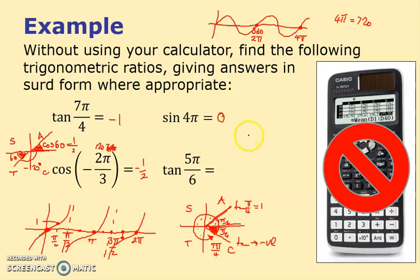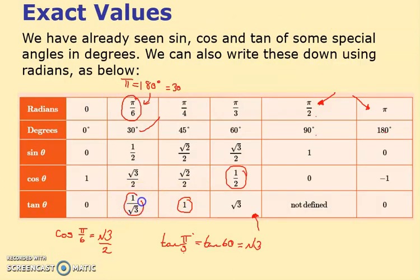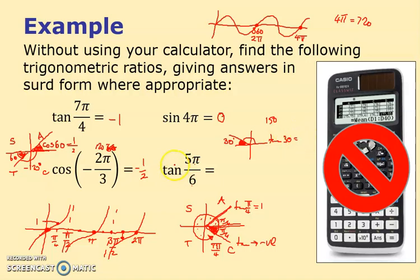For tan(5π/6): π/6 is 30 degrees, so 5π/6 is 150 degrees. Drawing that, the angle to the horizontal is 30 degrees. tan(30) is 1/√3. Using CAST — only sine is positive there — so tan(5π/6) is negative: −1/√3. Your calculator may write this as −√3/3, which is the same thing.